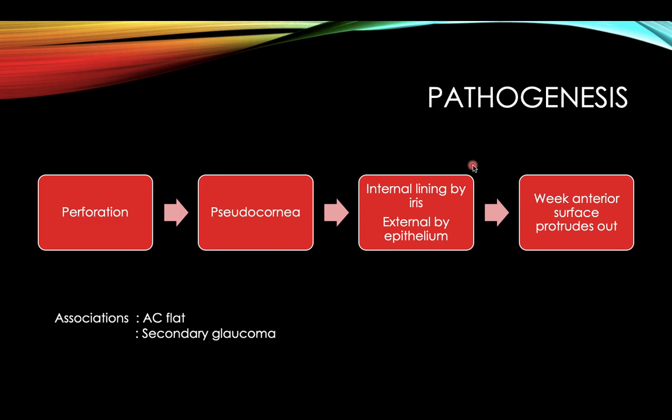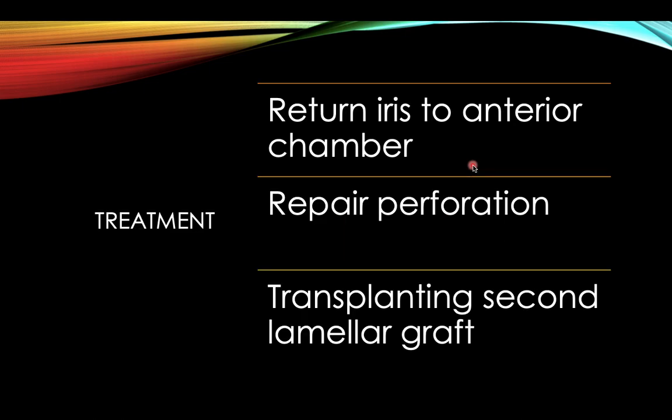The anterior surface is weak and protrudes out, resulting in anterior staphyloma. This can be associated with a flat anterior chamber and secondary glaucoma. Treatment involves returning the iris to the anterior chamber, forming the anterior chamber, repairing the perforation, and transplanting a lamellar graft if necessary.